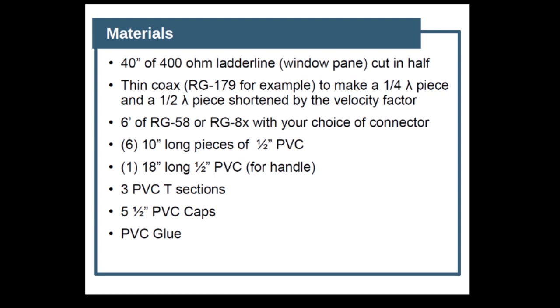We also need six feet of RG-58 or RG-8x with your choice of connector to hook up to your radio or attenuator. Six 10-inch long pieces of half-inch PVC, one 18-inch long half-inch PVC for the handle, three T-sections, five half-inch PVC caps, and some PVC glue. The PVC is all optional - you can make the same antenna on wood or other plastic, but for the most part I prefer to use PVC.